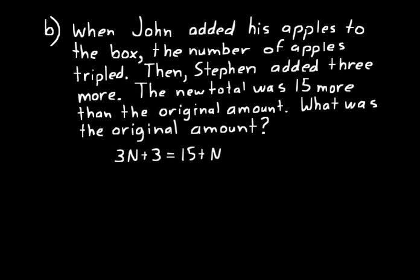Changing sides and changing signs: move n to the left and we get 2n. Move the three to the right and we get twelve. So 2n equals twelve, meaning n equals six. We started with six apples; that amount tripled to eighteen. Then three more were added — that's twenty-one. That new total was fifteen more than the original amount: fifteen plus six is also twenty-one. Correct.